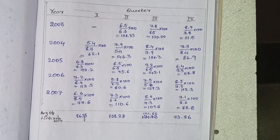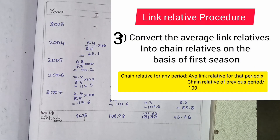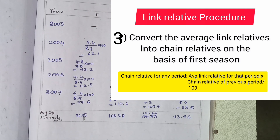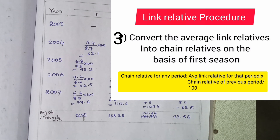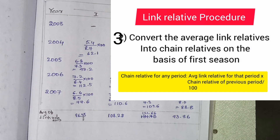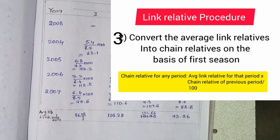Part 1 and Part 2 done. For the third step, we need to convert the average of link relatives as chain relatives. Chain relatives is a formula: the average link relative for the period, multiplied by the chain relative of the previous period, divided by 100.